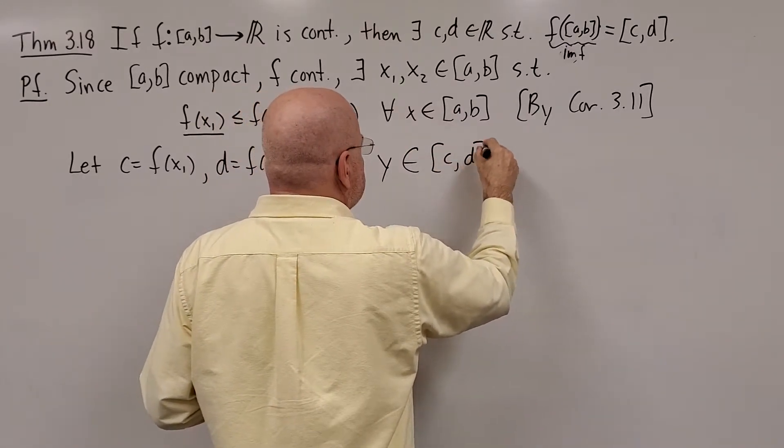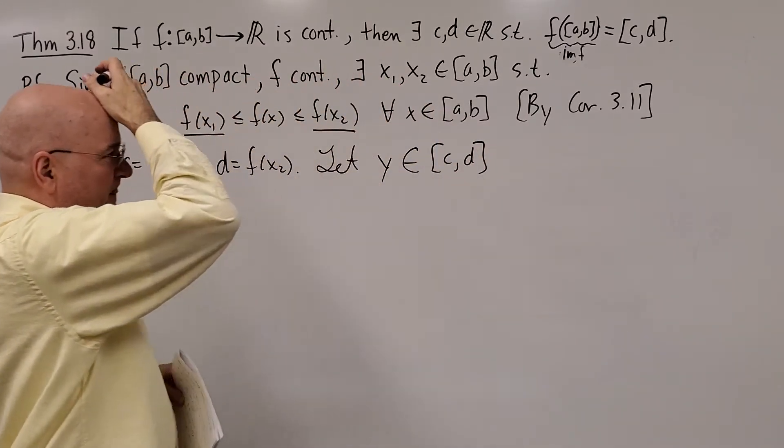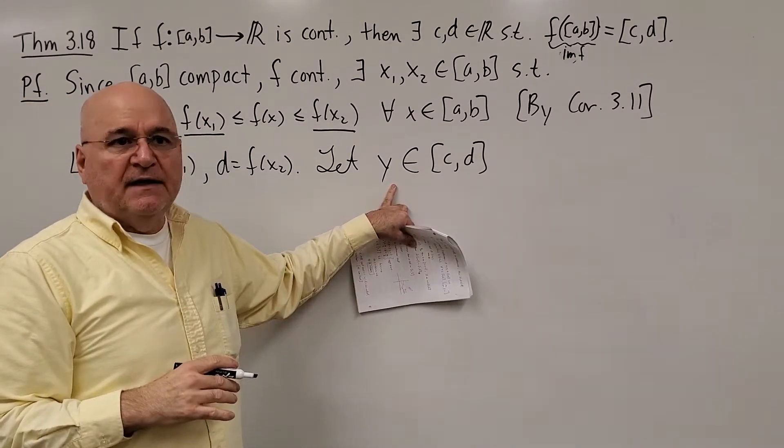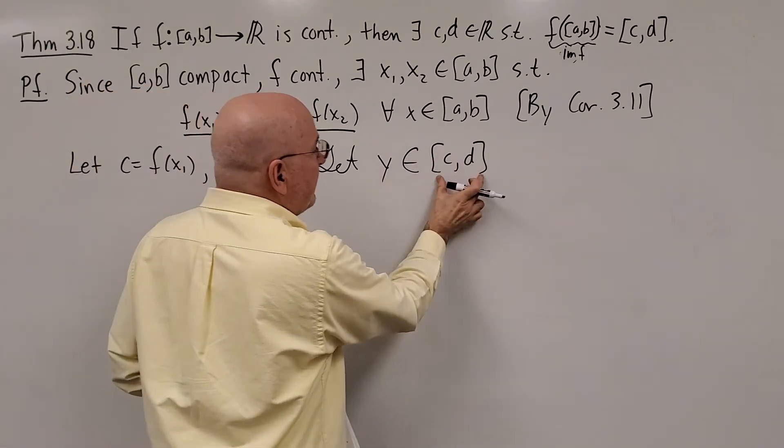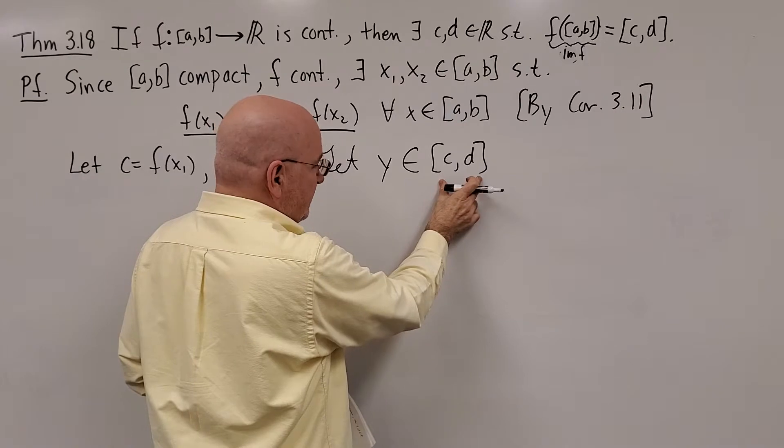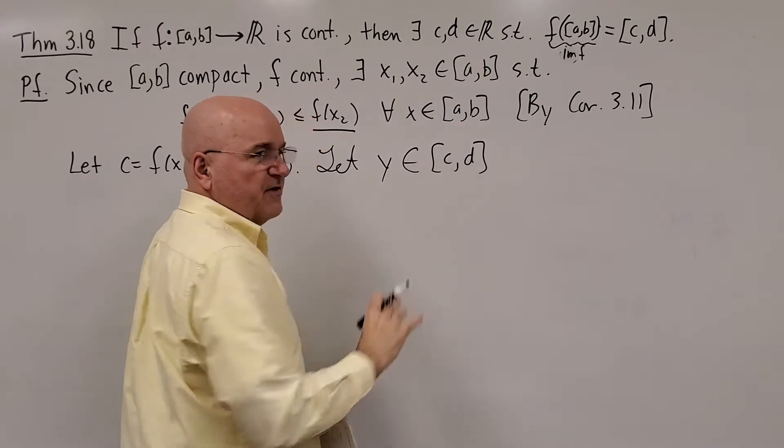So again, the minimum height of the function, the maximum height of the function. Let's let Y be any element in [C,D]. Think of that as being the height of a function. We have to show that there's an X that gives us this value, and therefore the theorem would hold true.